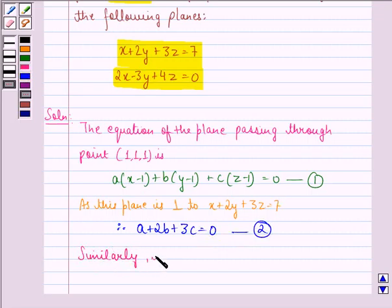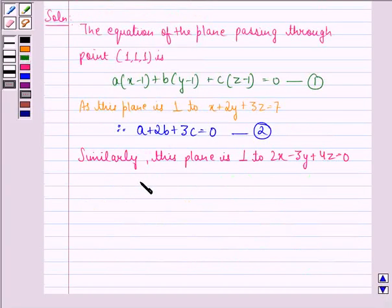Similarly, this plane is perpendicular to 2x - 3y + 4z = 0, therefore 2a - 3b + 4c = 0. This we call equation 3. Now,